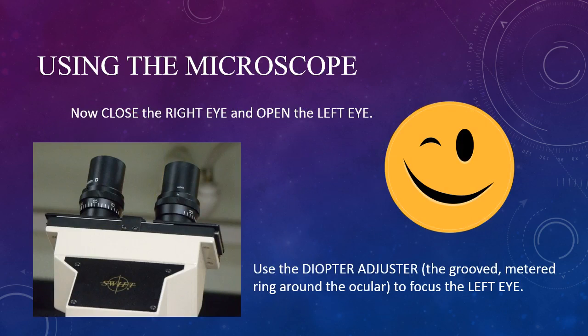Then we're going to switch eyes. Close the right eye, and opening the left, use the diopter adjuster — that grooved ring around the ocular — to bring the image into crisp focus for the left eye. Now, when both eyes are open, you should have a perfectly clear image for both eyes.